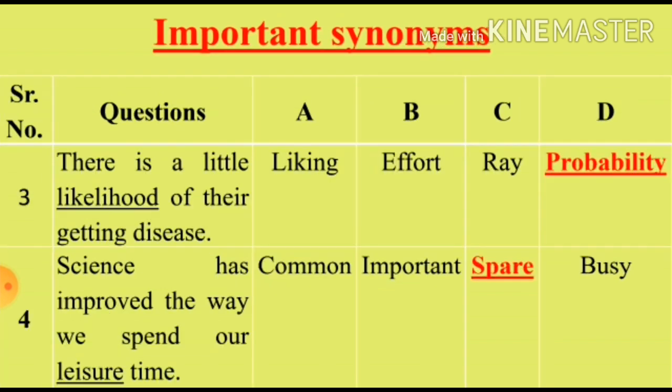Question 3: 'There is a little likelihood of their getting disease.' We will see the synonym for the word 'likelihood'. Option A: Liking (pasand). Option B: Effort (koshish). Option C: Ray (shwa). Option D: Probability (imkan). Options C and B are irrelevant. Option D, Probability, is the right synonym for the word 'likelihood'.